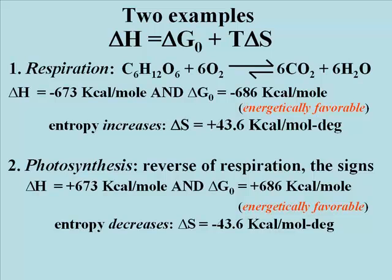For photosynthesis, delta H is plus 673 kilocalories per mole of glucose synthesized. The standard free energy delta G0 is plus 686 kilocalories per mole of glucose synthesized. T delta S can be solved — or intuited — to be negative 43.6 kilocalories per mole degree.